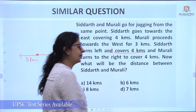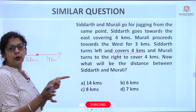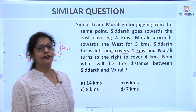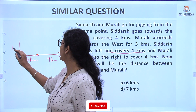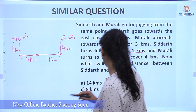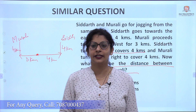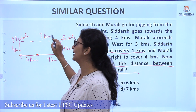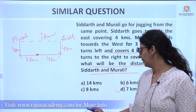Siddharth is going in the East direction and takes a left turn — left from East is upward (North) — and covers 4 kilometers. Murli turns to the right and covers 4 kilometers — right from his direction is upward (North). Here is Siddharth and here is Murli. The question asks for the distance between Siddharth and Murli — 3 kilometers and 4 kilometers — so the answer is 7 kilometers. The answer is option D.